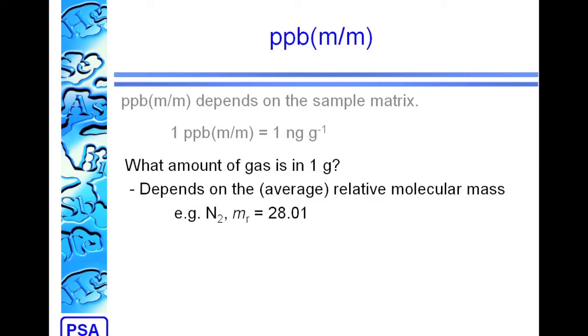For nitrogen, that's 28.01. For a mixture, it would be the average relative molecular mass for the mixture. So, we can work out the amount from that. The amount of nitrogen in 1 gram is 0.0357 moles.